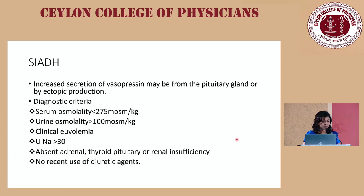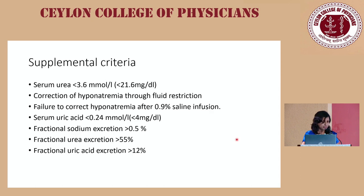A word on SIADH: there is increased secretion of vasopressin, either from the pituitary or an ectopic site. Diagnostic criteria: serum osmolality less than 275, urine osmolality more than 100, euvolemia, urine sodium more than 30, and exclusion of adrenal, thyroid, pituitary, and renal insufficiency. The patient should not be on diuretics. Supplementary criteria such as fractional excretion of urea or uric acid can help in difficult situations.